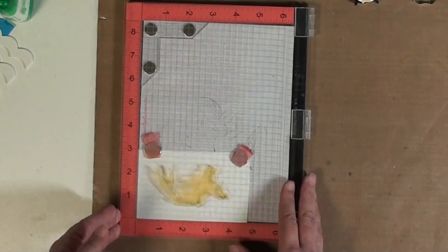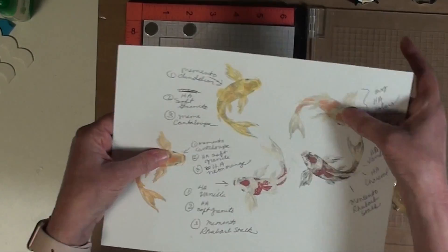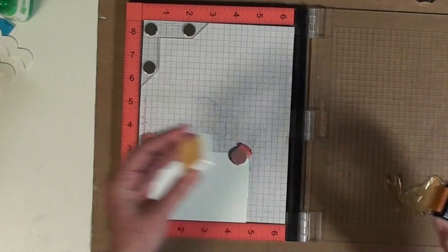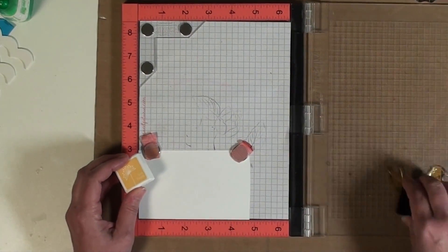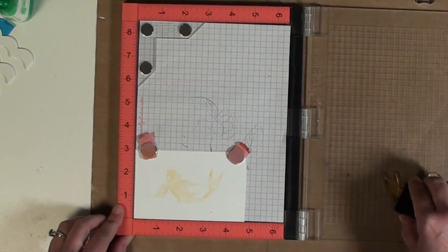In this section I just showed stamping one fish because all the other ones were done the exact same way. I just referred to my color chart whenever I was going on to the next one so that I could choose the appropriate ink color for that particular fish.